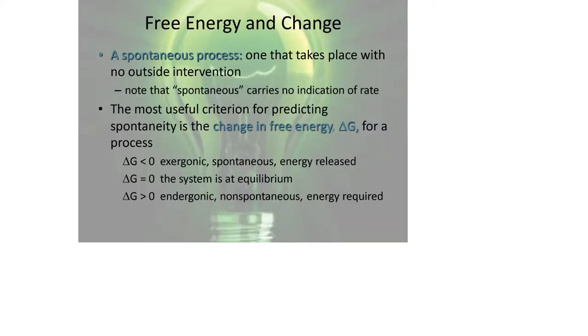So we have free energy. We talked about spontaneous versus non-spontaneous. This should definitely be a review. Delta G must always be negative for it to be spontaneous. That's called exergonic. Endergonic is non-spontaneous, and that's when delta G is positive. So you have to put some type of energy into the system. If delta G is equal to zero, that means it's at equilibrium.